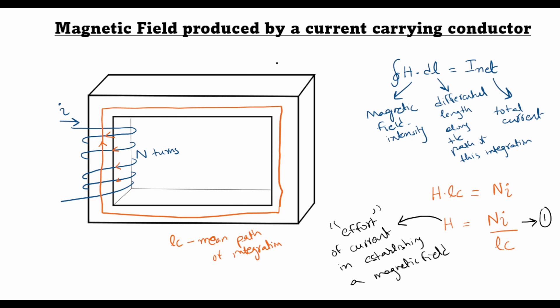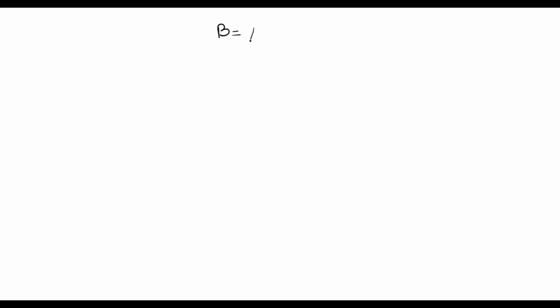This magnetic field also plays a role in the relative ease with which a magnetic field can be produced. The magnetic field intensity H is related to the magnetic flux density B with the relationship B equals mu times H.